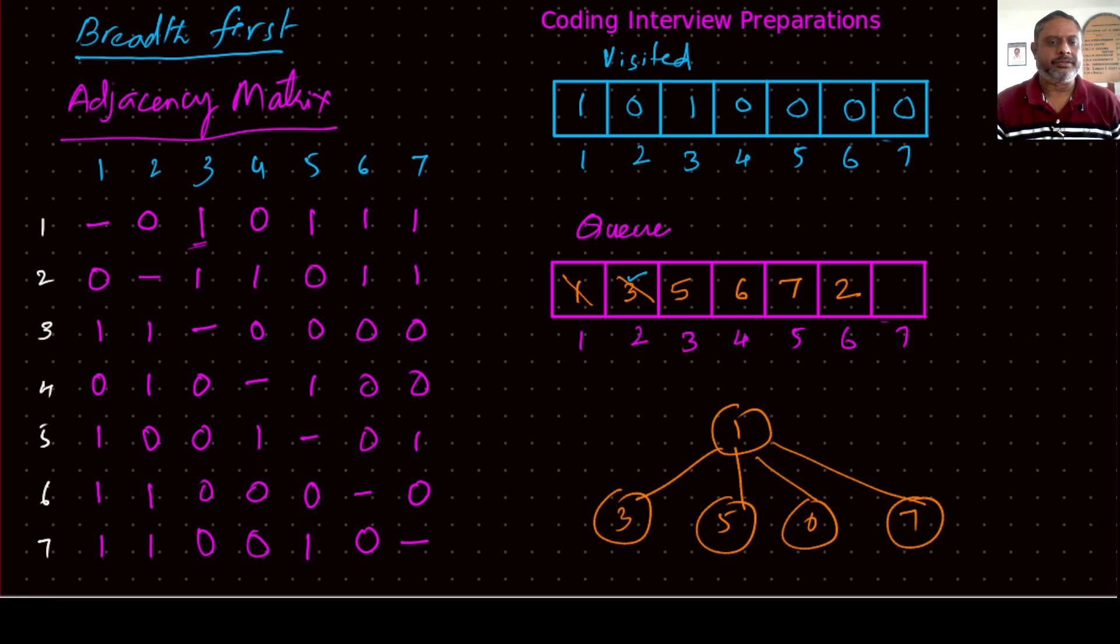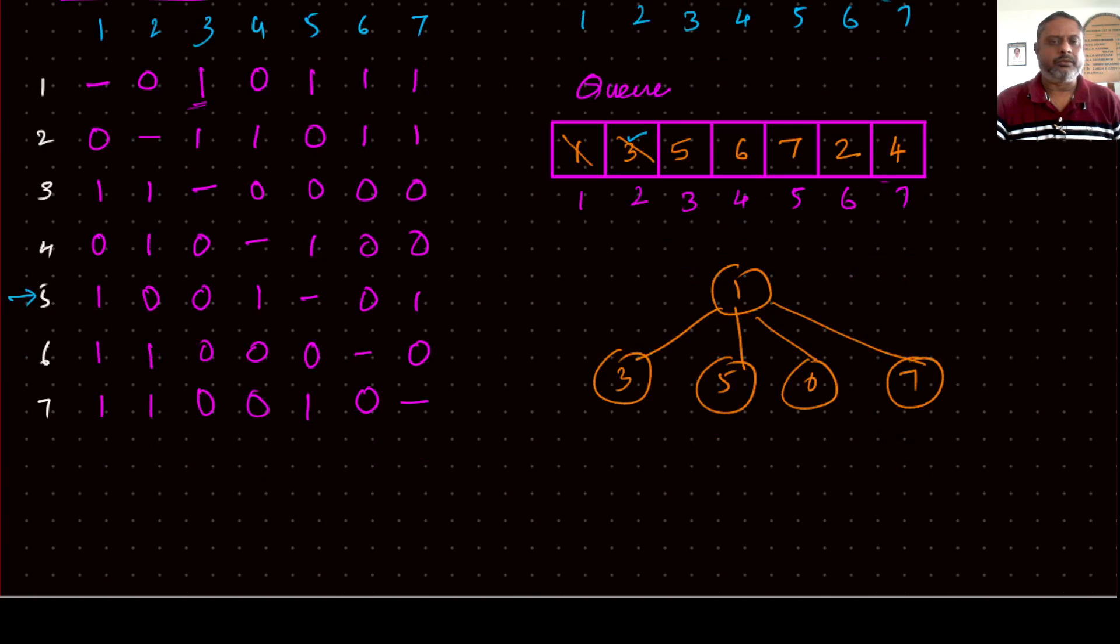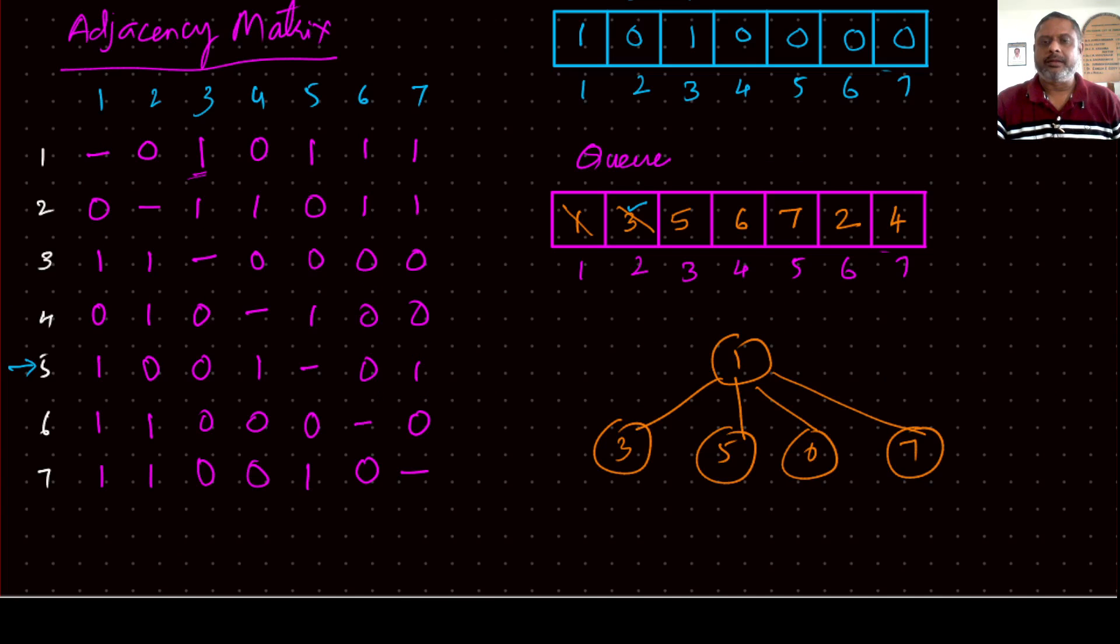Then who is next? Next is five. So look at row five. One, one is already visited, cannot go. Four, four is not visited, neither found in the queue, so we can add four to this. Four gets added. Then seven, seven is already there. So what did we get, from three, we added a two, so two gets added.